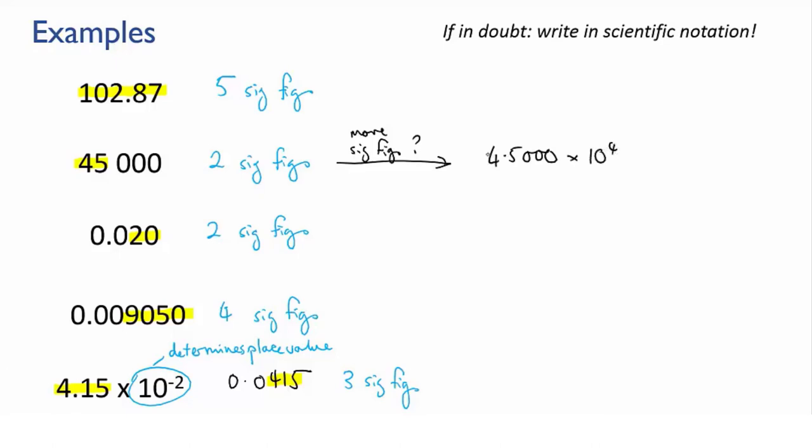When written like this, the trailing zeros become part of a number with a decimal point, and so we know for sure that they are significant. So, brush up on your scientific notation.